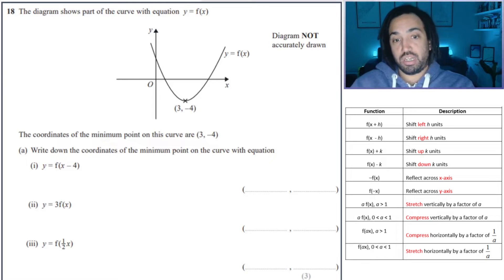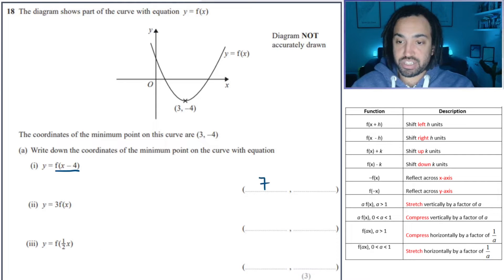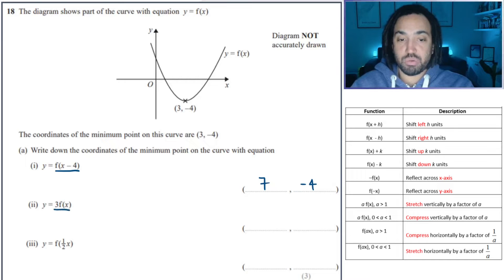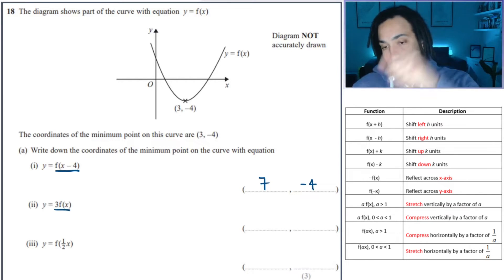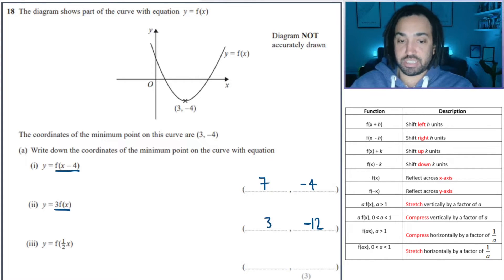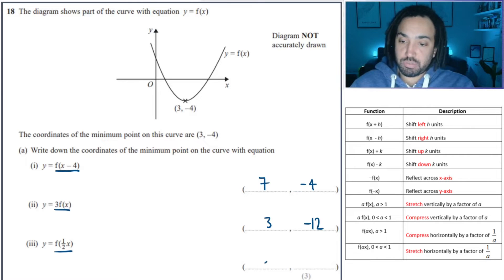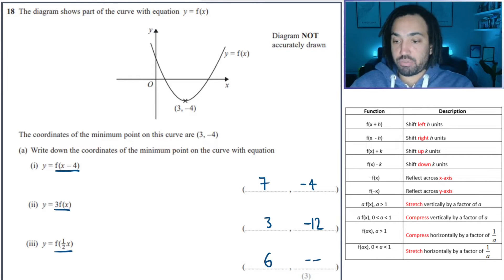We've got some more classic graph transformations. We need to add 4 to the x coordinate, so therefore we get 7; y is unaffected. Here we need to multiply the y by 3 because that's a stretch in the y axis, so the y coordinate is times by 3 and x is unaffected. And this is a stretch in the x axis by a scale factor of 2, so the x coordinate will be multiplied by 2 and y will be unaffected.